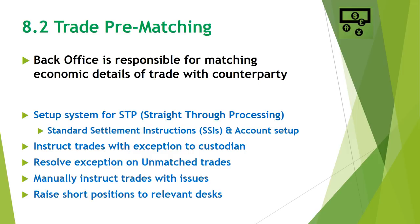Examples where manual instruction is needed include new rights issues or new securities not yet set up in the back office reference systems. Although trade prematching happens before settlement date, back office teams have a view on current and near future positions. If they see any short positions in future, they can raise it to relevant desks so that a cover can be arranged. Back office teams are also responsible for setting up standard settlement instructions for counterparties, which contain the counterparty's beneficiary bank, beneficiary account number, and beneficiary custodian, so that when a trade goes into market the custodian can identify the counterparty from the settlement SWIFT.